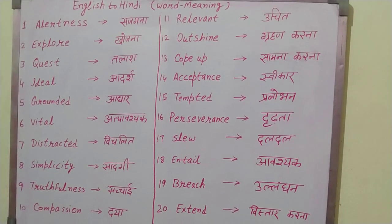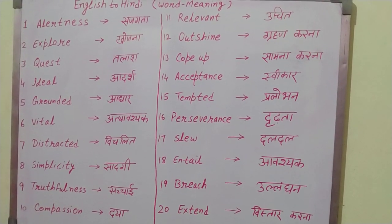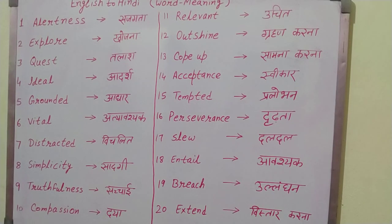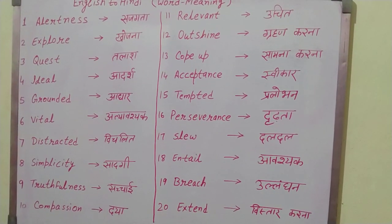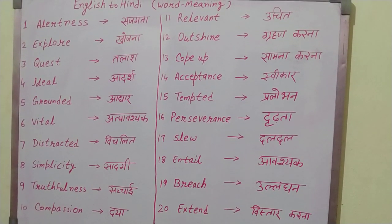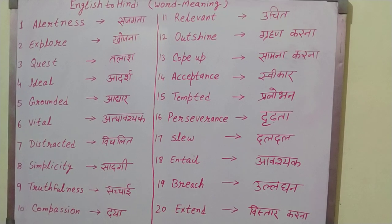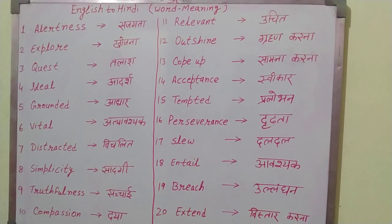Number 5: Grounded — Adhar. Number 6: Vital — Atyavashak. Number 7: Destructed — Vichlit. Number 8: Simplicity — Sadagi.